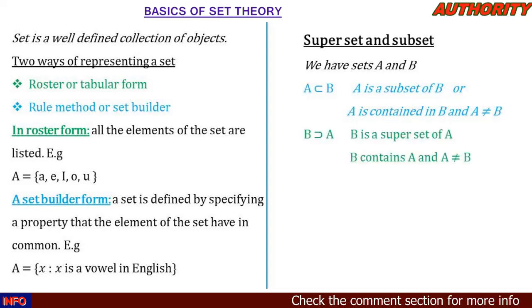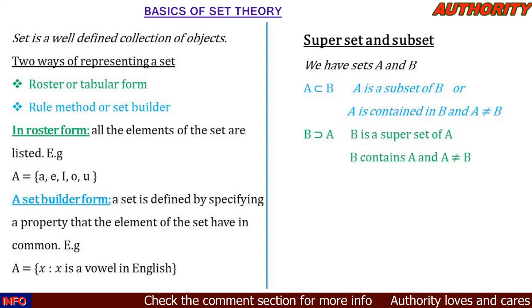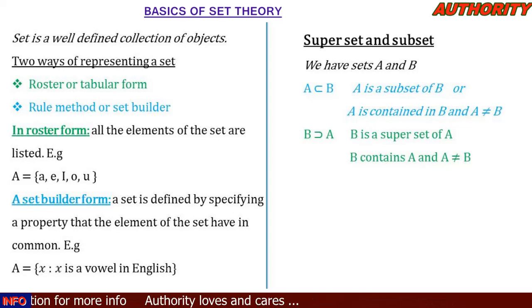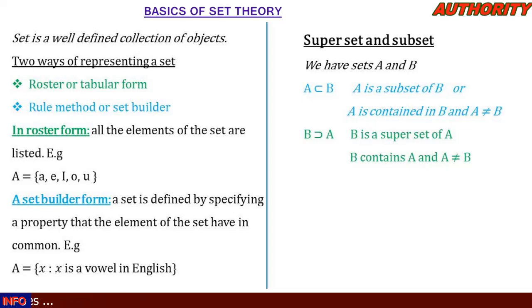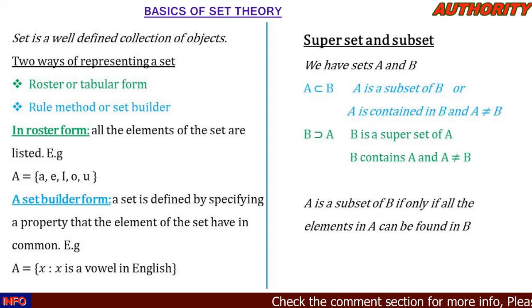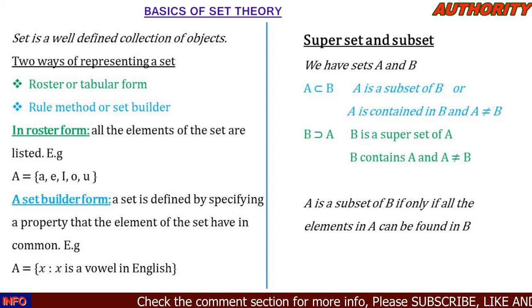Similarly, the symbol B ⊃ A means B contains A — the sign is facing B, so B holds the content. We say B contains A, or B is a superset of A, and A is not equal to B. A set A is said to be a subset of set B if and only if all the elements in A can be found in set B.